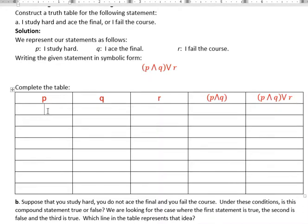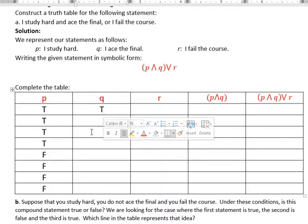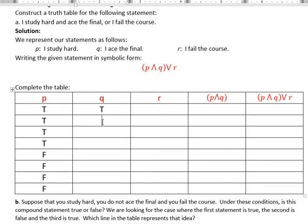The way these truth tables are going to work is that for P, I'm going to put T in the first four columns because there's eight outcomes, four times true, and then four times false. Then for Q, I'm going to put two trues, two trues followed by two falses. This is a pattern that you can just know. The last thing I'm going to do is follow up with R, putting true and false alternating.